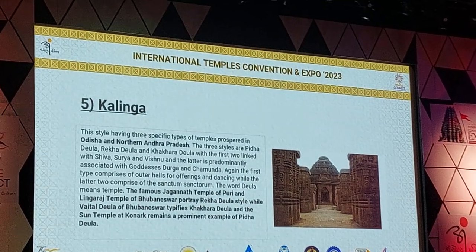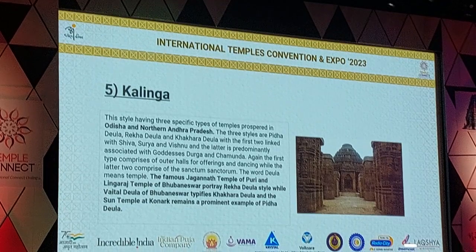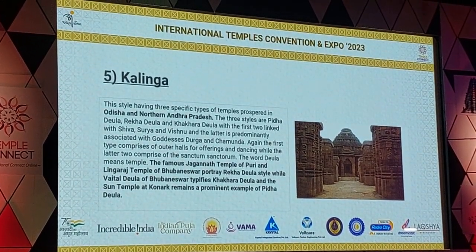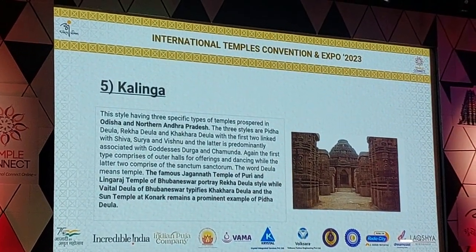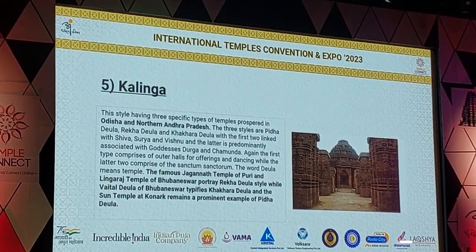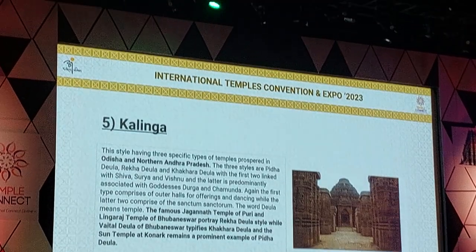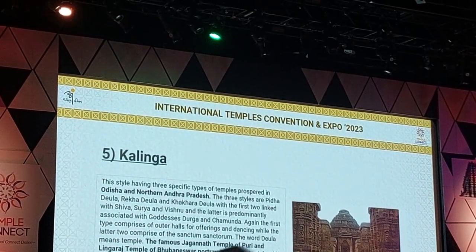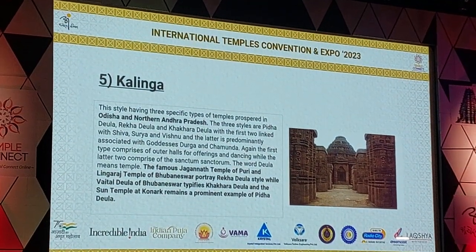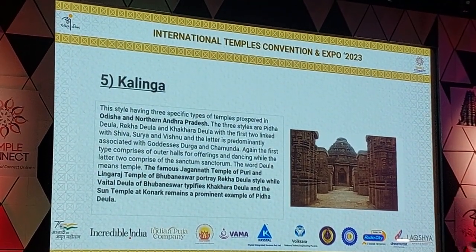Kalinga includes three subtypes. The first two are linked with Shiva, Surya and Vishnu as the predominant deities. The Goddess Durga and Chamunda are also associated with this style. The famous Jagannath temple of Puri and the Vingarash temple of Umneshwar are from these times.